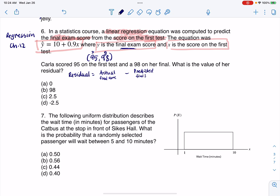I'm just going to write score because I don't have enough room. Final score. Now I know her actual final exam score was 98. And then I need to subtract her predicted final score. And how do I find her predicted final score? I have my predicting equation.